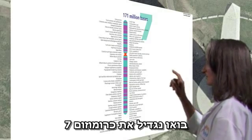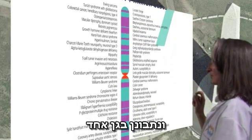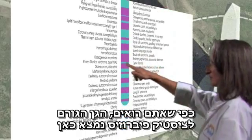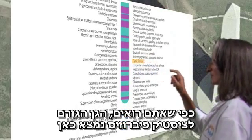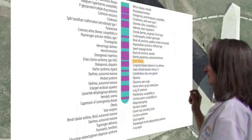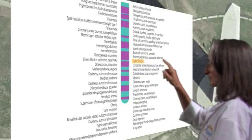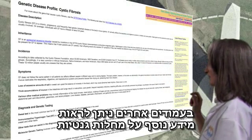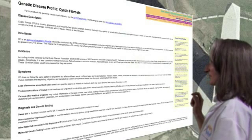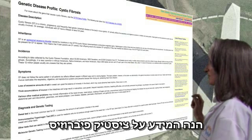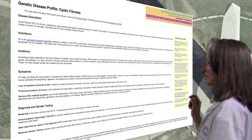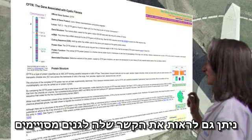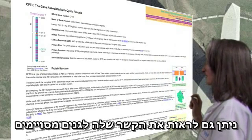Let's enlarge Chromosome 7 and look at one gene thereon. As you can see, the gene that causes cystic fibrosis is here. On other pages, you can see genetic disease profiles. Here is the cystic fibrosis profile. You can even examine specifics about some genes.